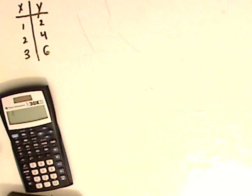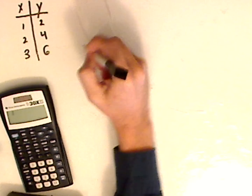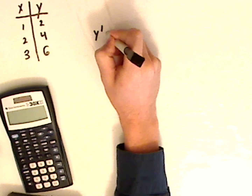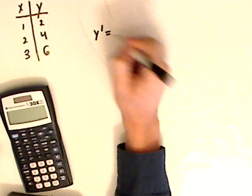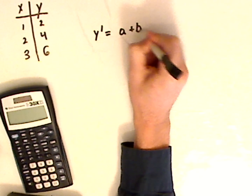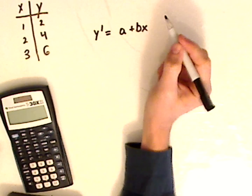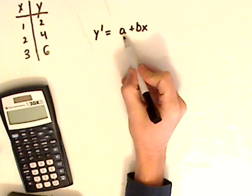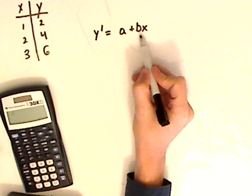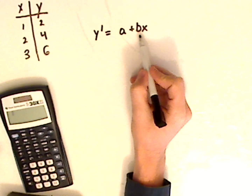Hi, I'm JD and what we're going to be doing today is finding the line of regression. Here's the equation: predicted y equals a plus bx, where a is your y-intercept and b is your slope.